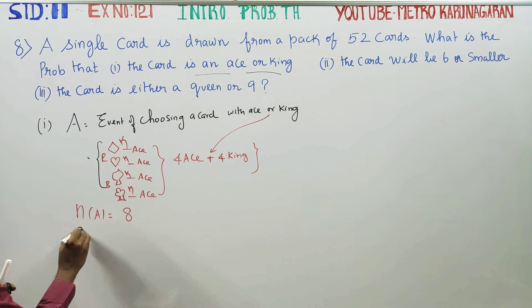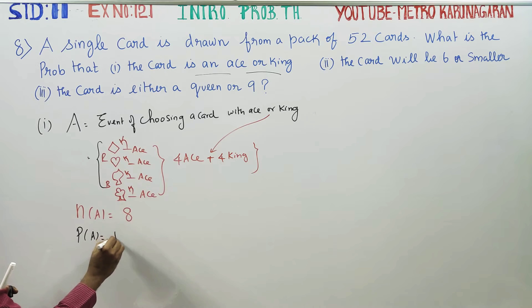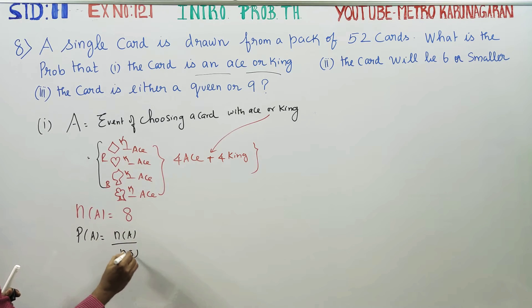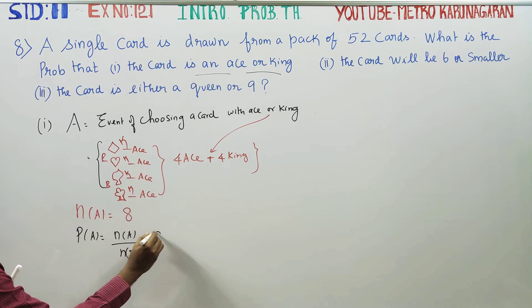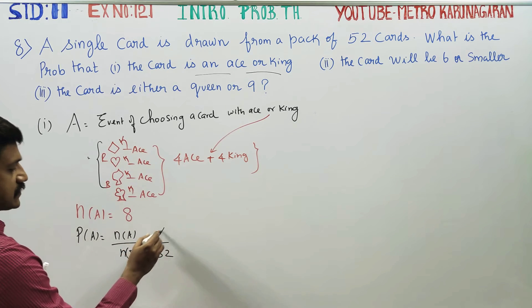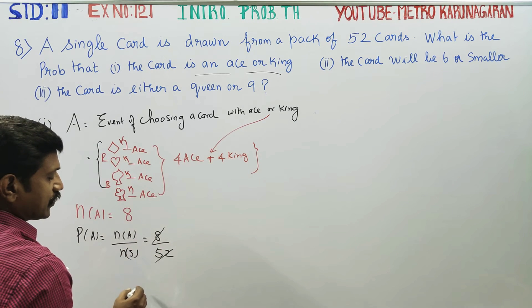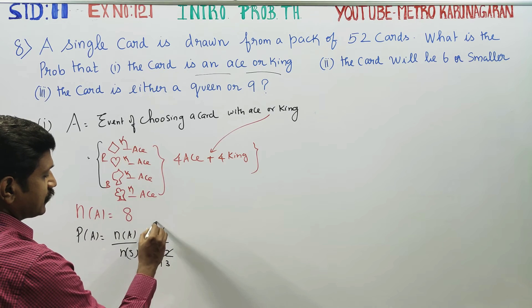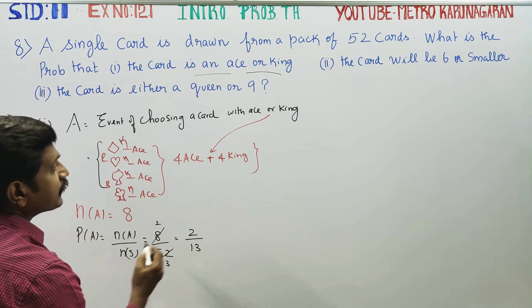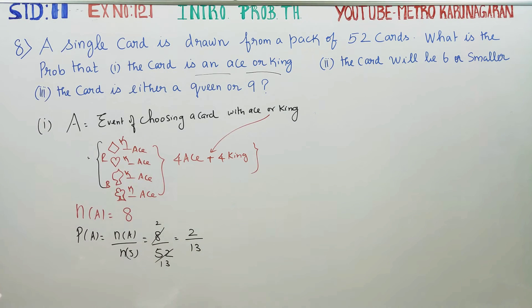Probability of A is equal to n of A by n of S, which is 8 by 52. 4 tables cancel, giving 2 by 13. Your answer is 2 by 13. This is my first sum — the event of choosing a card with ace or king.